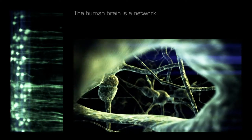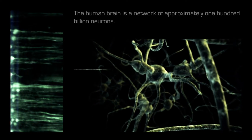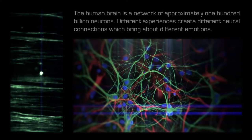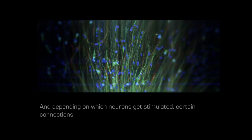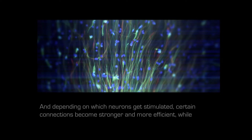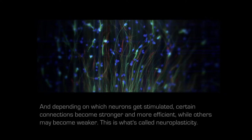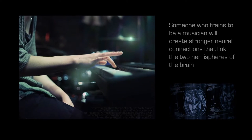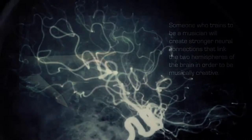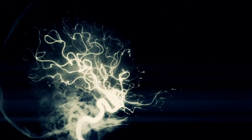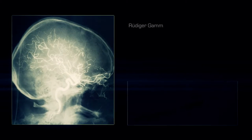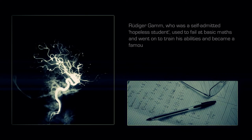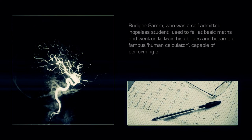The human brain is a network of approximately 100 billion neurons. Different experiences create different neural connections which bring about different emotions. Depending on which neurons get stimulated, certain connections become stronger and more efficient, while others may become weaker. This is what's called neuroplasticity. Someone who trains to be a musician will create stronger neural connections that link the two hemispheres of the brain in order to be musically creative. Virtually any sort of talent or skill can be created through training. Rüdiger Gamm, who was a self-admitted hopeless student, used to fail at basic math and went on to train his abilities and became a famous human calculator, capable of performing extremely complex mathematics.